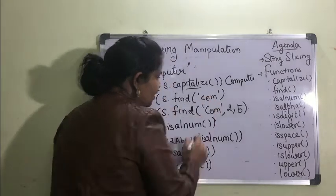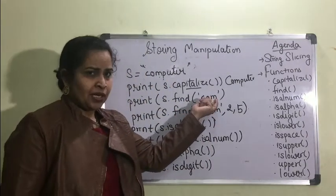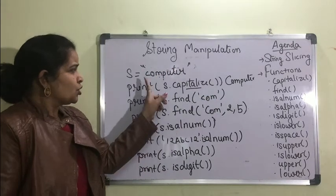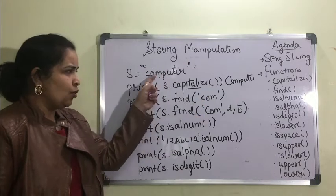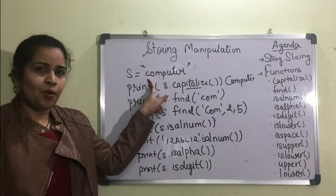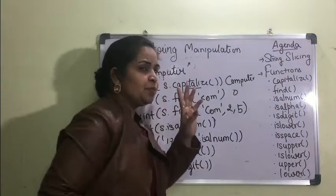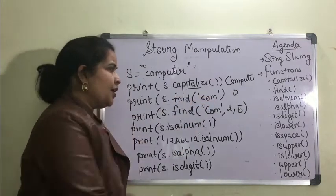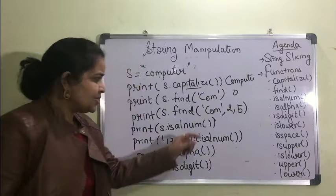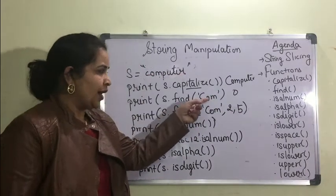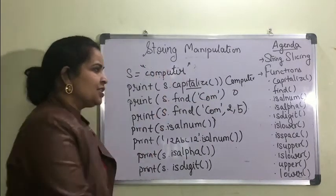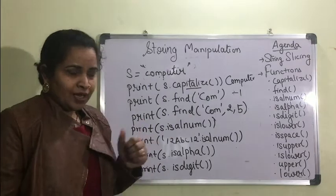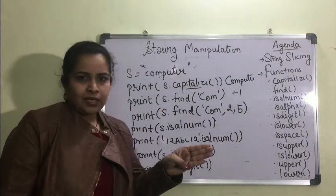s.find() — this find function will find the specified substring in the main string. So s.find('com') — 'com' starts at index 0, so it will print 0. It prints the index of the first character where the substring starts. If the substring has a capital letter and doesn't match, it will print -1.